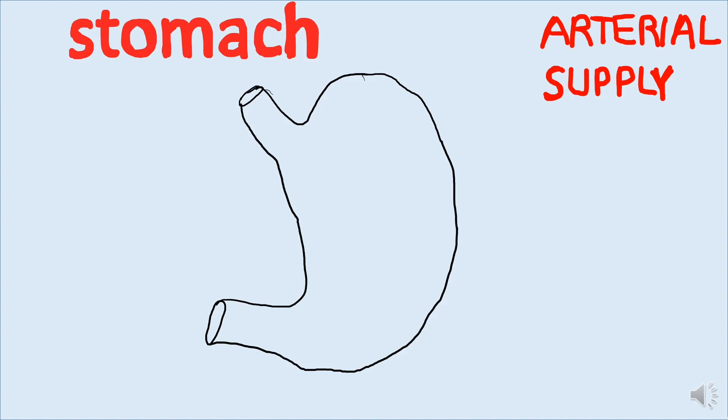It all begins with the abdominal aorta, which descends in your abdomen and gives off important branches. One very important branch is the celiac artery, also known as the celiac trunk, which gives off important branches that will supply the whole stomach.